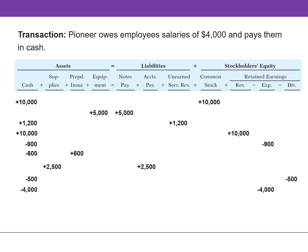In this transaction, Pioneer pays $4,000 in salaries to its employees, which decreases cash. Salary and wages expense reduces stockholders' equity. In this transaction, both assets and stockholders' equity are reduced.